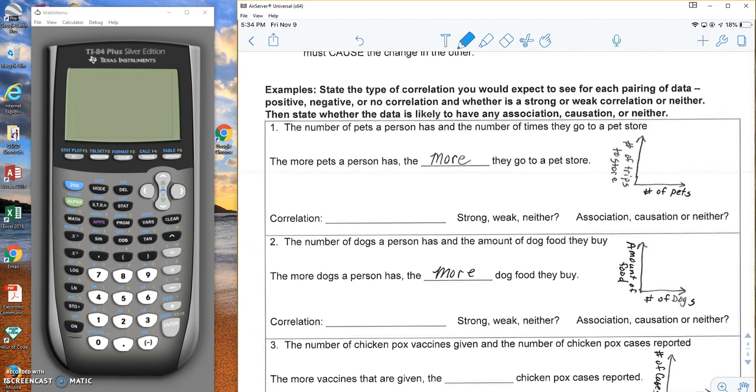For these examples, they ask us to state the type of correlation you would expect to see for each pairing of data, positive, negative, or none, and whether there is strong, weak correlation or neither. Then state whether the data is likely to have any association, causation, or neither.